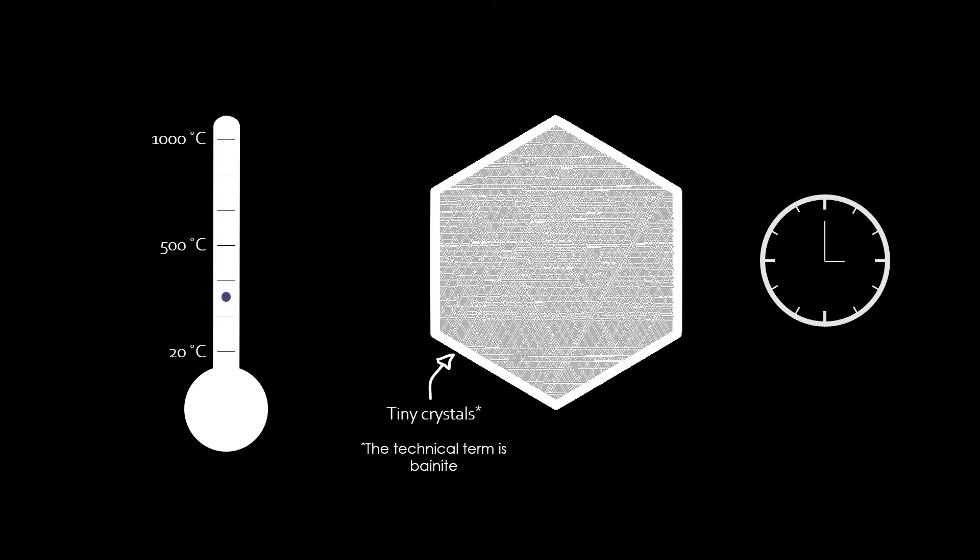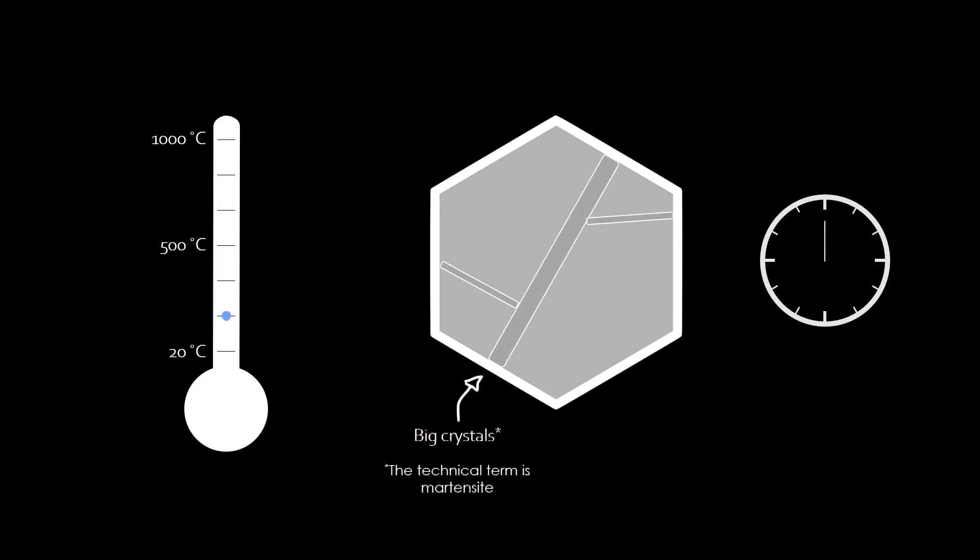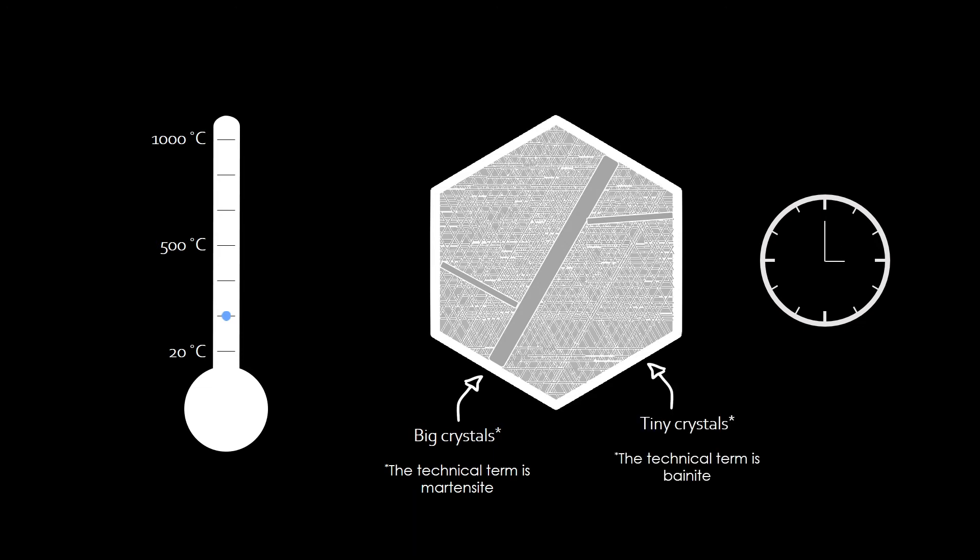Fortunately, we are finding ways to speed up this process. One way of doing this is by cooling the steel a little bit below the temperature we usually cool it. Then some big crystals start to form very fast, which is not exactly what we want. But when we hold the temperature and wait, the tiny crystals start to form way faster than before.